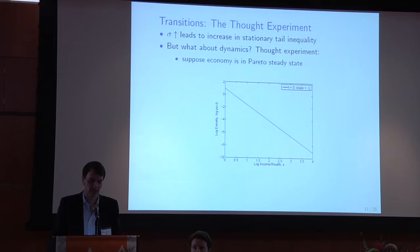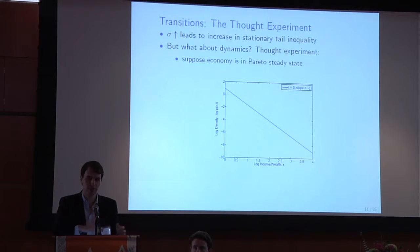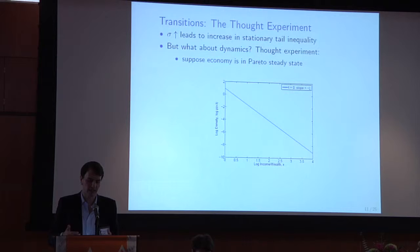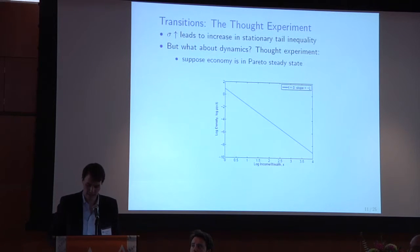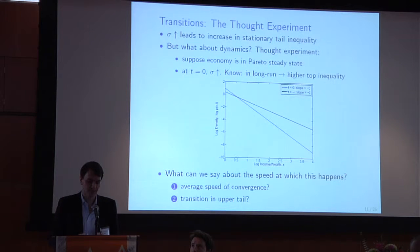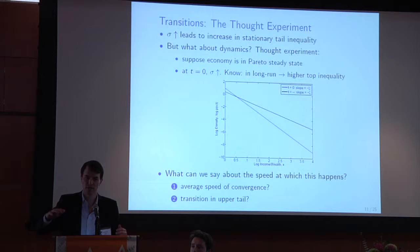Here's the main thing we're going to study. Think about the experiment where this parameter sigma — how much luck there is in earnings accumulation, i.e., the variance of permanent earnings — goes up. From what I've shown, that leads to an increase in stationary tail inequality. But the big question is: what about the dynamics? Suppose you're in a steady state with a Pareto tail. On a log-log scale it looks like the blue line. Then sigma goes up. You know in the long run you go to higher top inequality — the black line. But how fast do you get there, and where does the distribution move first?